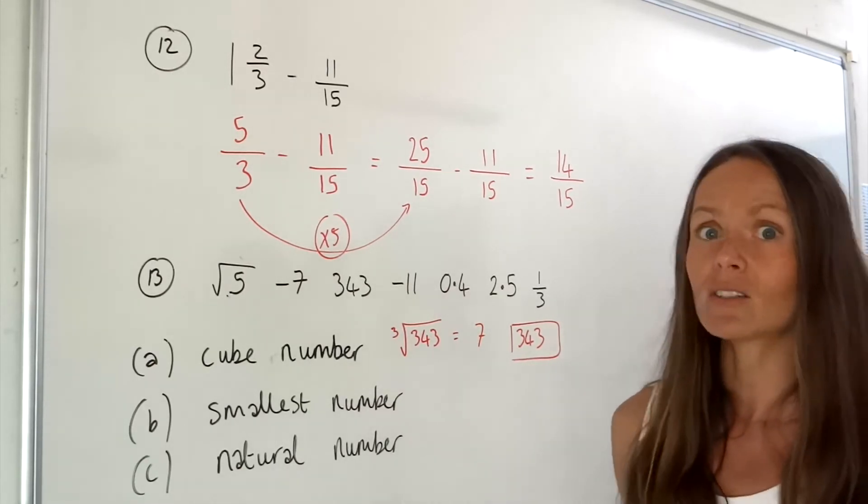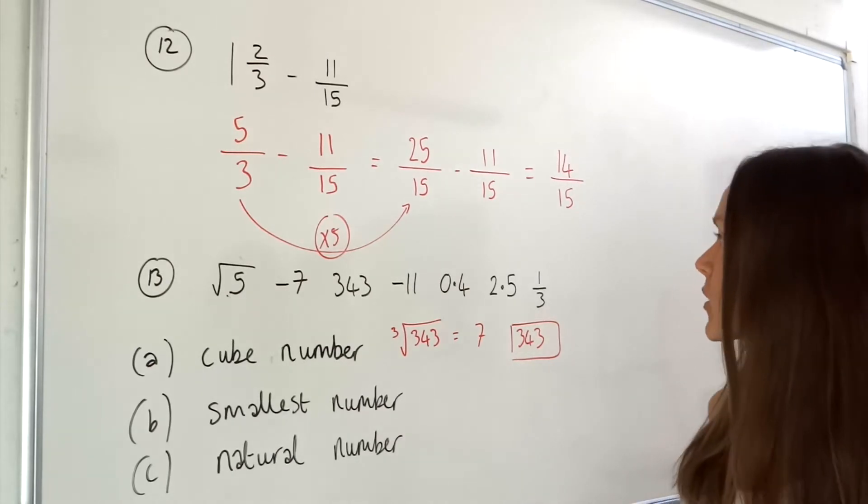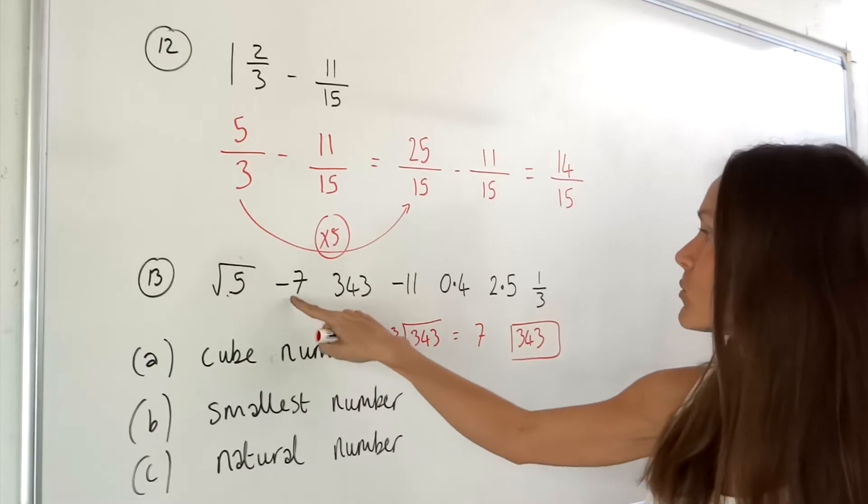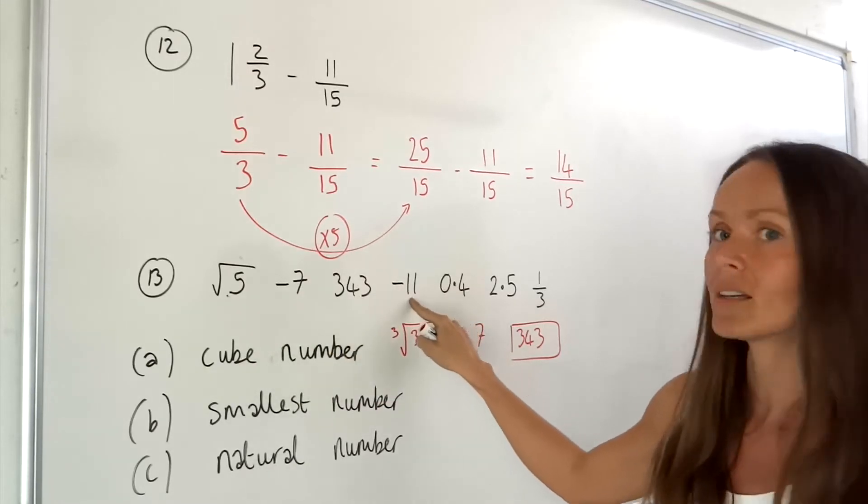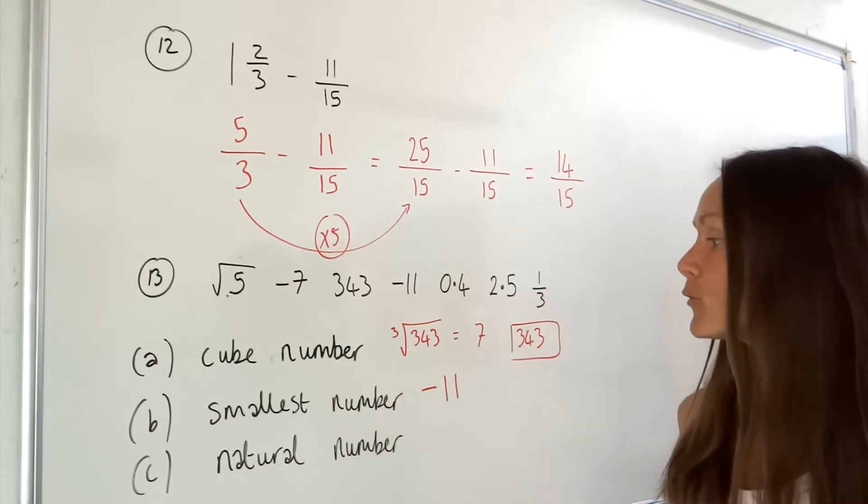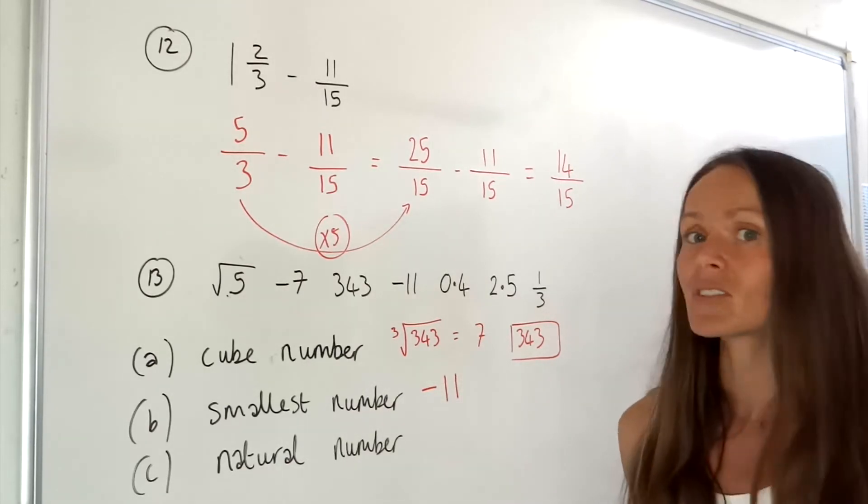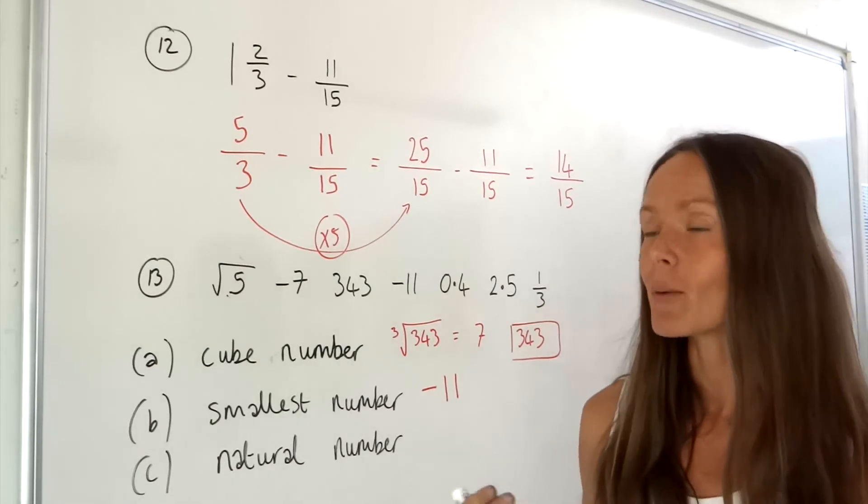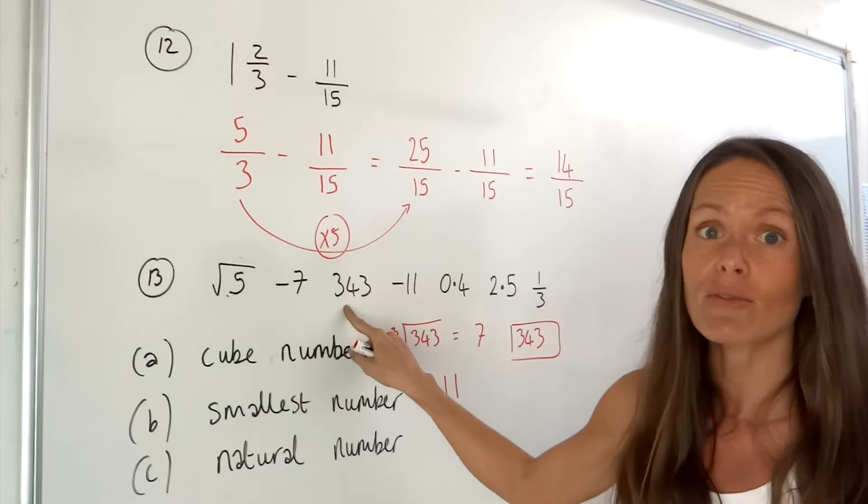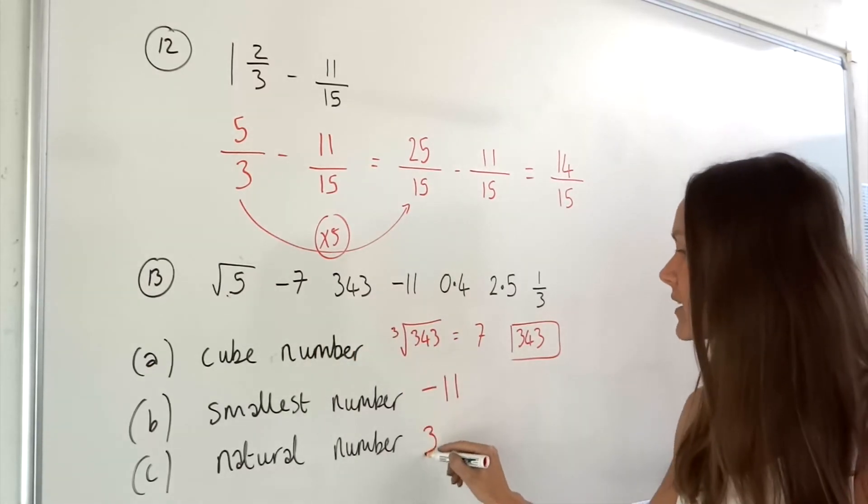For part b it says find the smallest number, so really we need to look at the negative numbers and the smallest one is negative 11. For part c a natural number is a positive integer, so it has to be a positive whole number. Straight away I can see this one, 343, so that is a natural number.